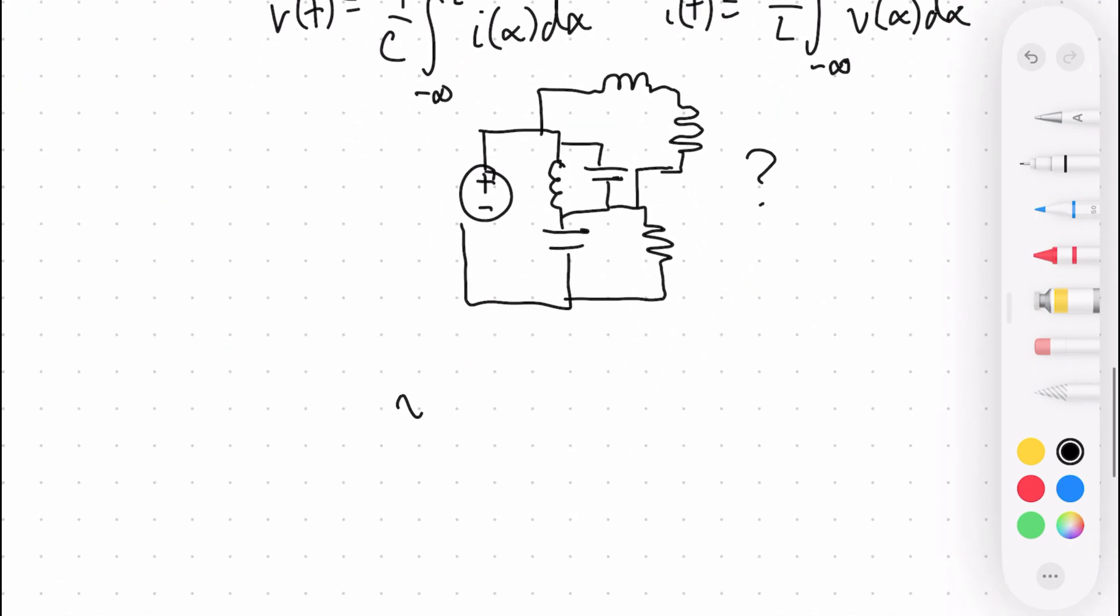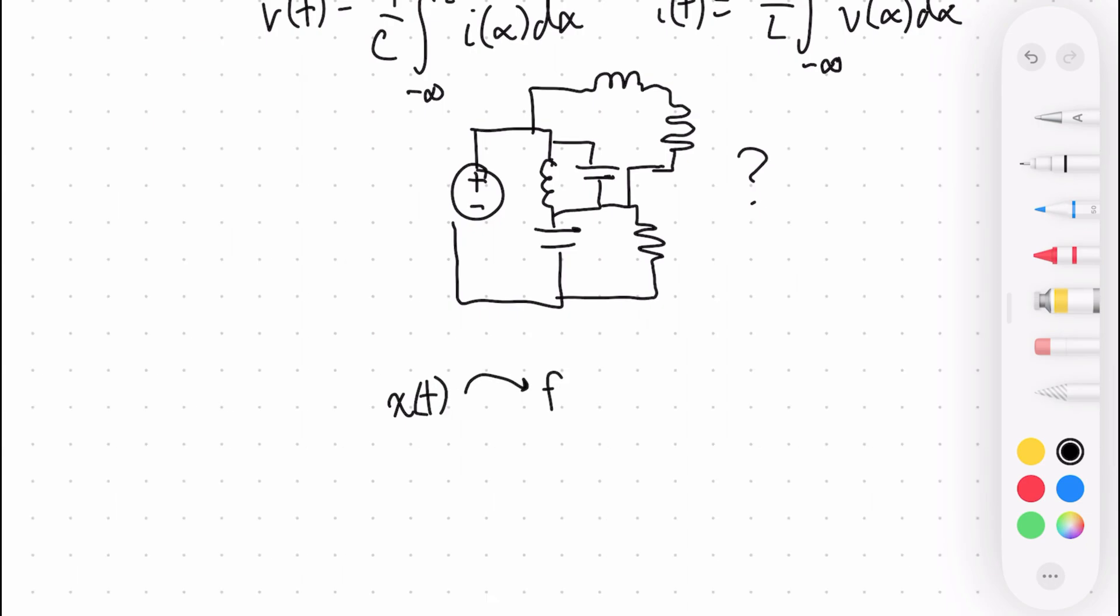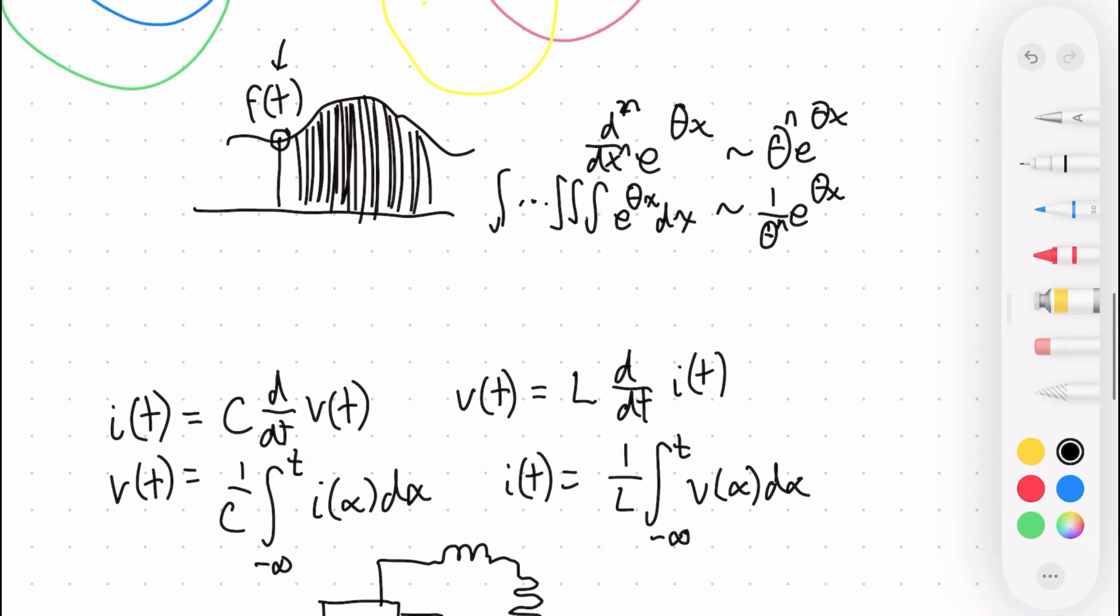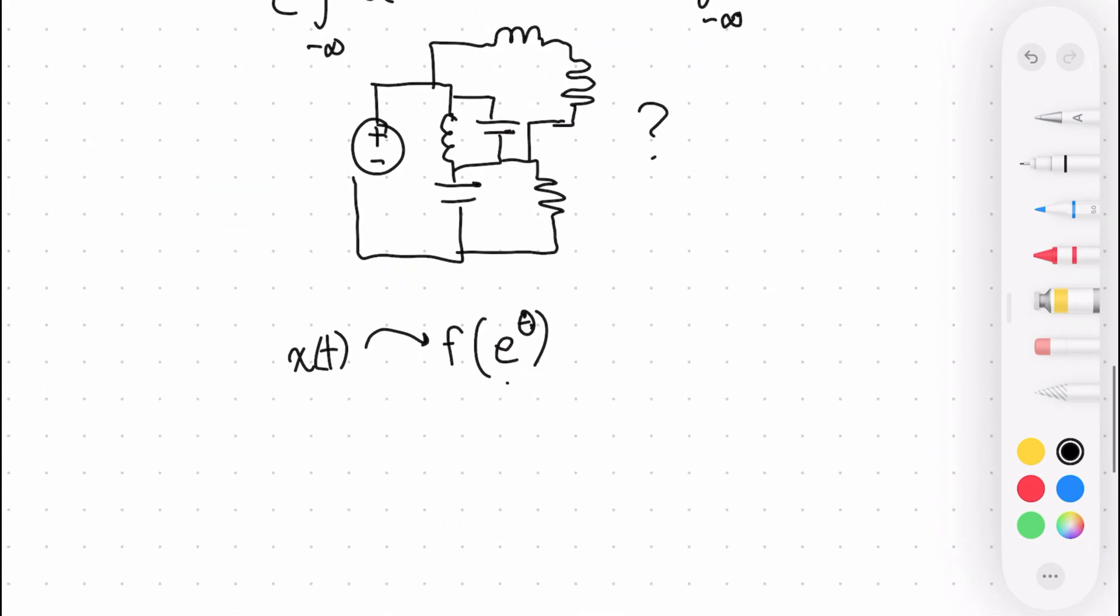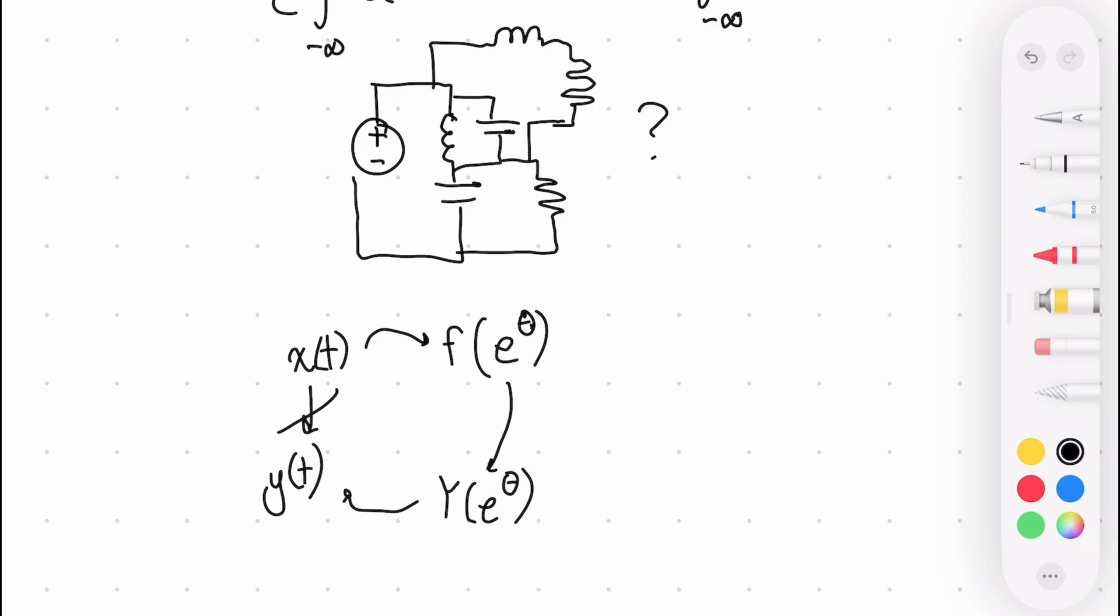So what we're going to do is rather than having a function of time where we're plotting as a function of time, we want to have something that's a function of e to the theta, I guess. If we can write our function as a sum of these exponentials, what we've basically done now is we can start taking derivatives and integrals. We do whatever transformation we need to do, like solving the expression. Now we get, let's say, y of e to the theta, something that's a function of the exponential. And then once again, we go back and we have y of t. So we basically avoided having to do this, which is really annoying, and found a workaround, found an easy way to do it.